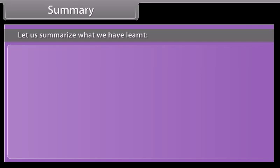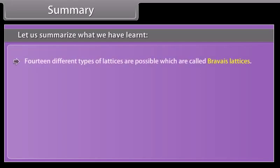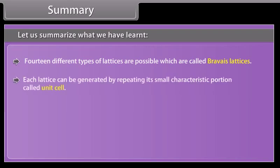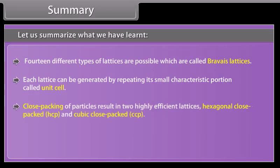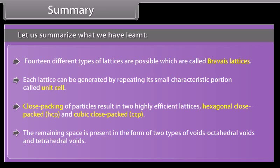Summary: fourteen different types of lattices are possible, called Bravais lattices. Each lattice can be generated by repeating its small characteristic portion called a unit cell. Close packing of particles results in two highly efficient lattices: hexagonal close-packed (HCP) and cubic close-packed (CCP). The remaining space is present in the form of two types of voids — octahedral voids and tetrahedral voids.